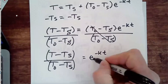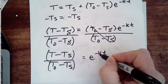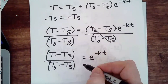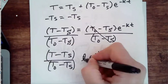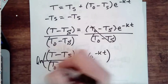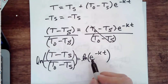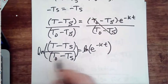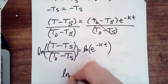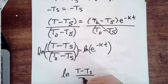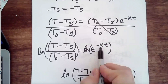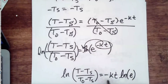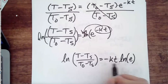Now, to make an exponent travel down to the base level, we have to use the natural log. I'm using natural log because it's an E right here — we just use logarithms, but natural log is the best choice. Natural log of E will cancel out. So then I have natural log of T minus T sub S over T sub zero minus T sub S equals negative KT times natural log of E. Remember, the exponent travels to the front — that's where it is, it's traveled down to the front.